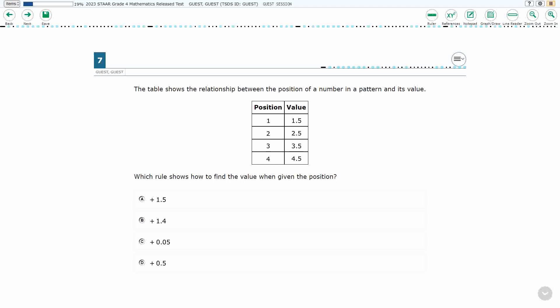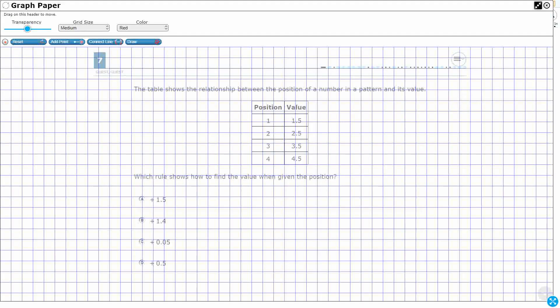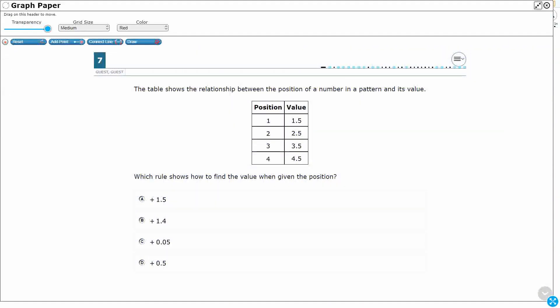So which represents how to find the value? Well, let's take a look at what we have here. So what do we have going on here? We've got each position, and you notice that as the positions go higher from 1 to 2 to 3 to 4, the values also get higher. 1.5, 2.5, 3.5, 4.5.